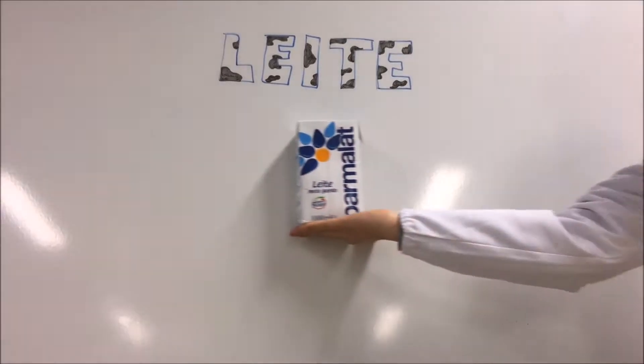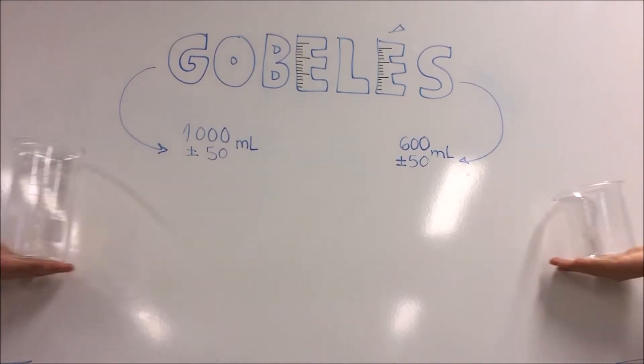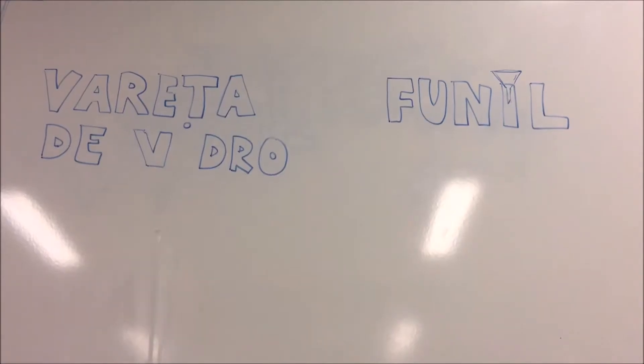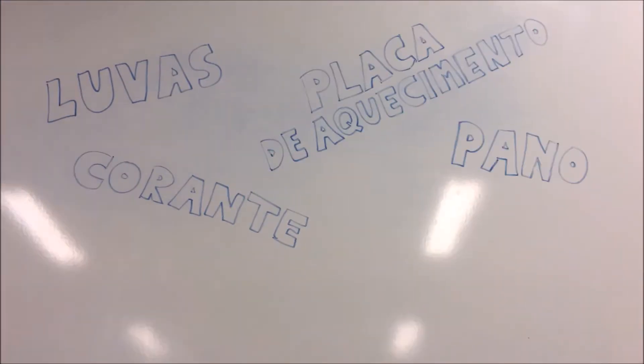For this experience we used milk, acetic acid, two beakers of different capacities, two graduated cylinders of different capacities, a glass rod, a glass funnel, disposable gloves, food coloring, a heating plate and a cloth.